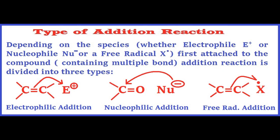Addition reaction is divided into three types depending on the species which is added to the substrate first. If it is an electrophile, represented as E+, which gets first added to the substrate, then it is called an electrophilic addition reaction. Similarly, if a nucleophile represented as Nu⁻ and a free radical represented as X• gets first added to the substrate, then the reactions are called nucleophilic addition reaction and free radical addition reaction respectively.